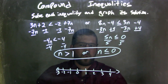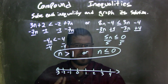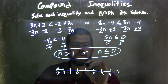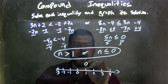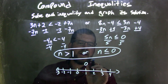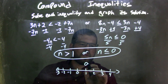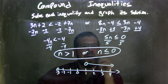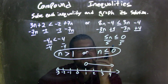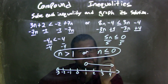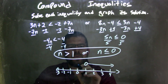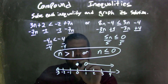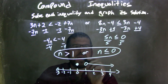Since n is greater than 1 — not equal to 1, just greater than 1 — I have an open circle at 1. Then I put my arrow to the right, because n is greater than 1. For the next one, we said n is less than or equal to 0. Since it could equal 0, I put a closed circle at 0.